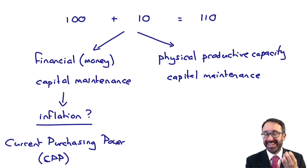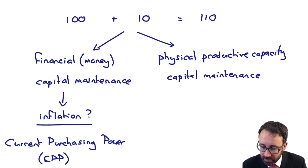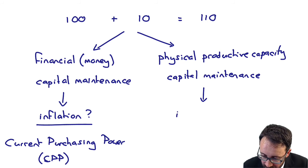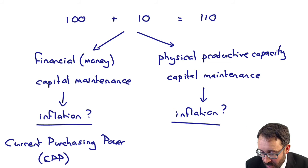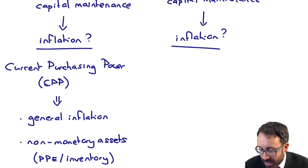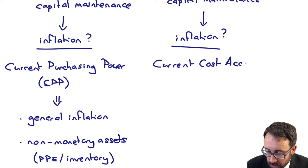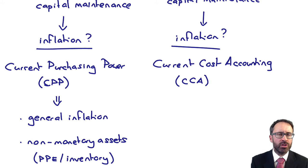If inflation is significant, then we can't, and therefore we would need to adjust that specific asset for the level of inflation. When we're incorporating inflation to see whether or not our capital has been maintained, we're going to use what's referred to as Current Cost Accounting, or CCA for short.